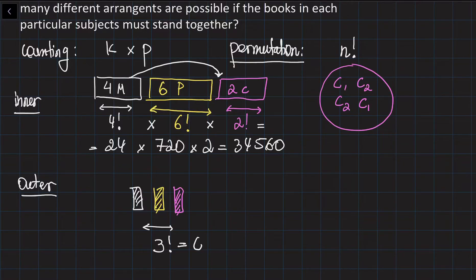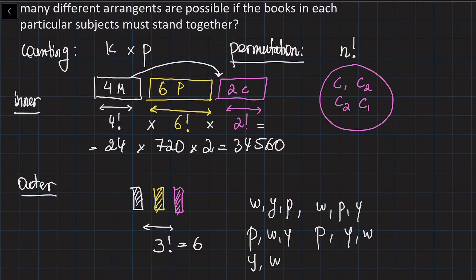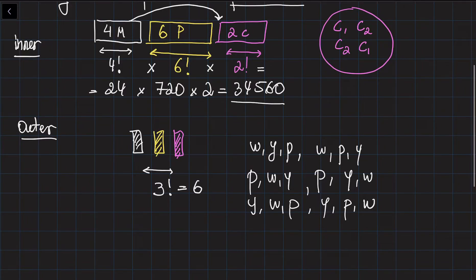There are six different rearrangements of the three blocks. For example: white, yellow, pink; or white, pink, yellow; pink, white, yellow; pink, yellow, white; yellow, white, pink; or yellow, pink, white — six different rearrangements of the three blocks. For every rearrangement of the blocks, you have 34,560 cases of rearrangements of the books.